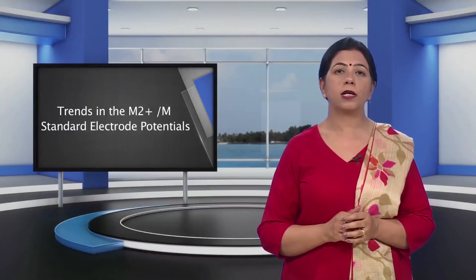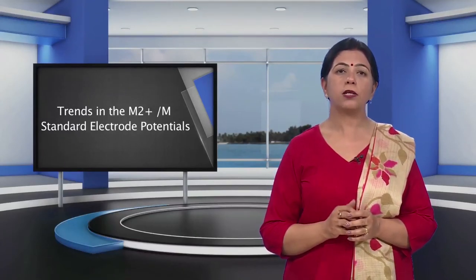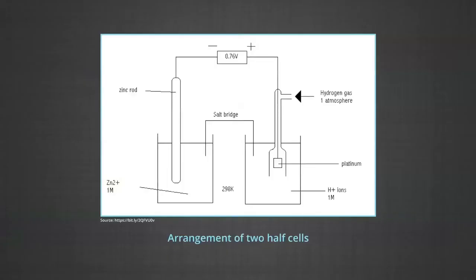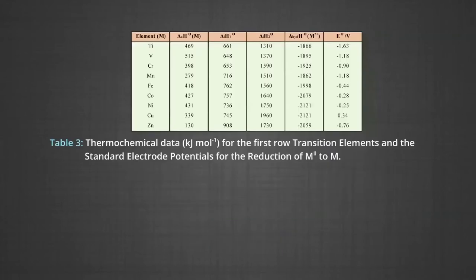Let us study about the trends in the M2+ to metal atom standard electrode potentials. In unit 3 electrochemistry, you studied how standard reduction potentials are measured using the standard hydrogen electrode. The table shows the thermochemical parameters related to the transformation of solid metal atoms to M2+ ions in solution and their standard electrode potentials.